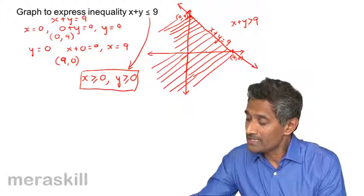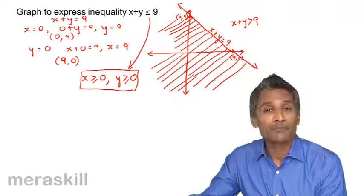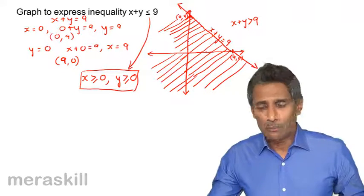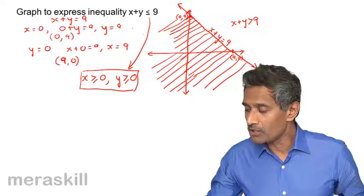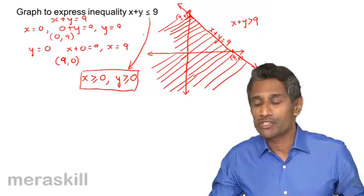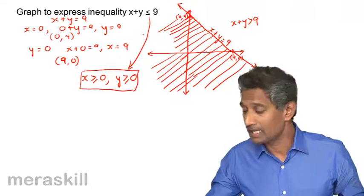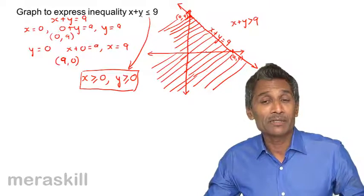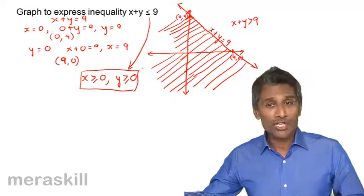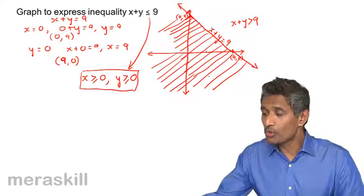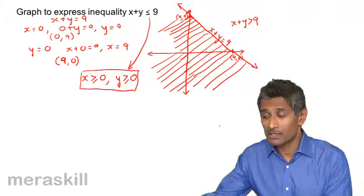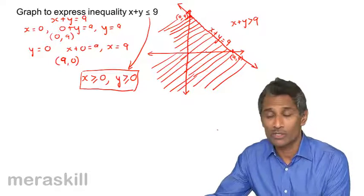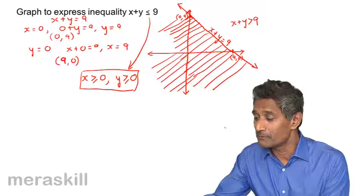However, in this example no such constraint has been mentioned, so we shade the whole region. This is how we shade: simply plot the line, check which is the origin side and which is the non-origin side, and shade accordingly. Let's reinforce this with more examples.